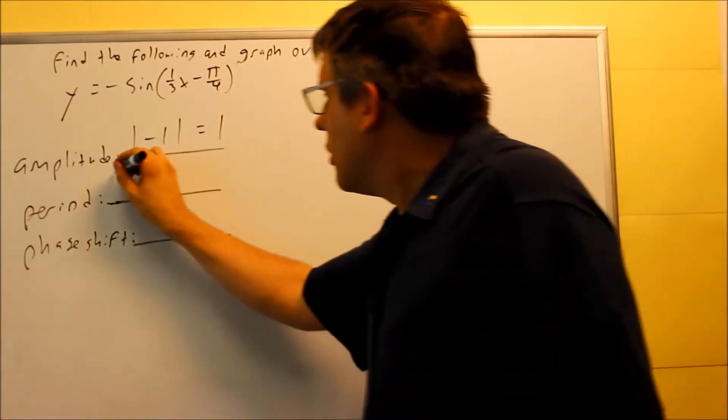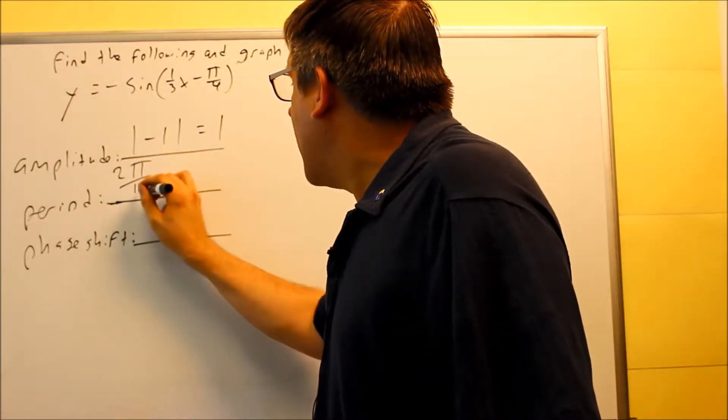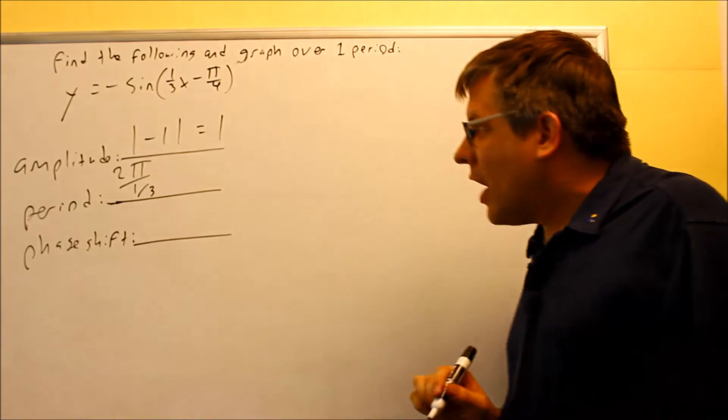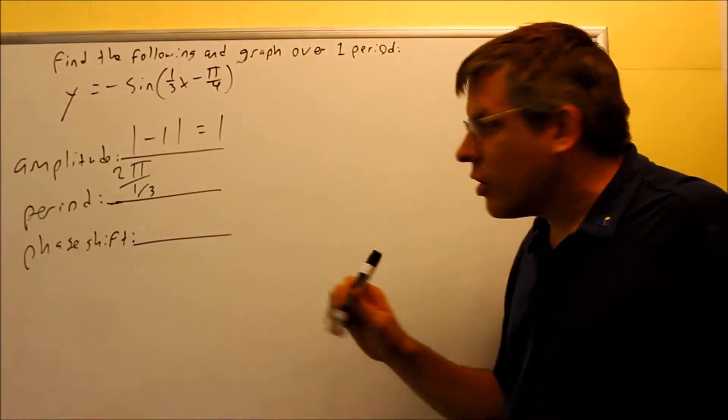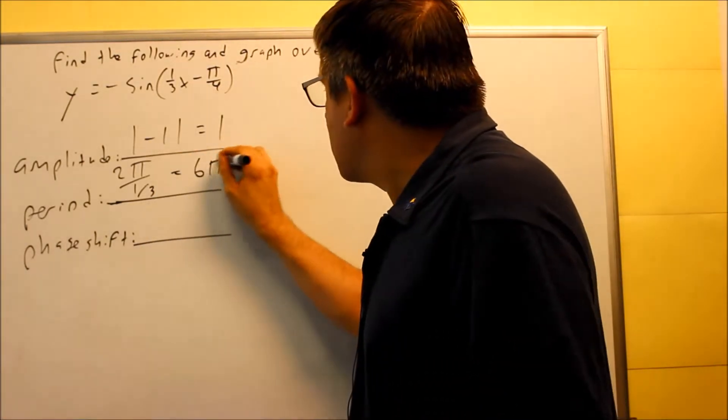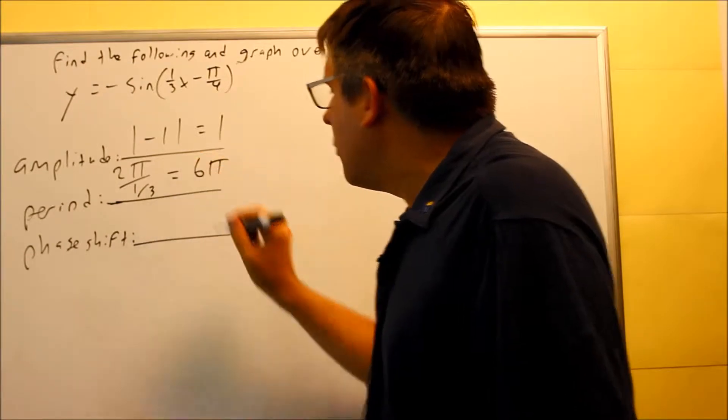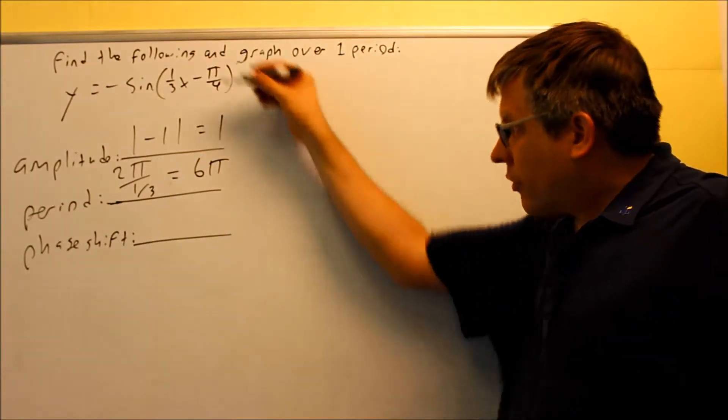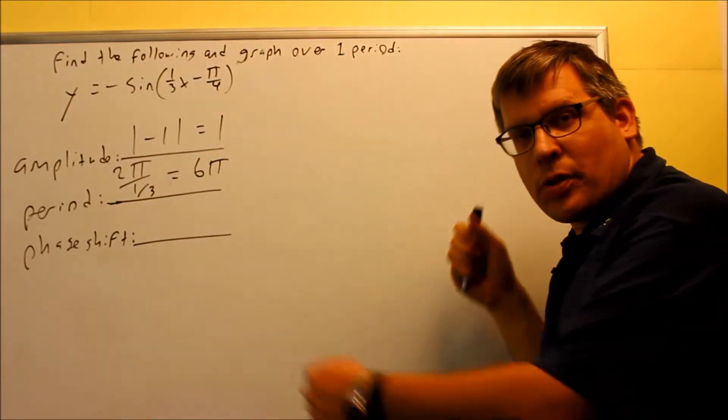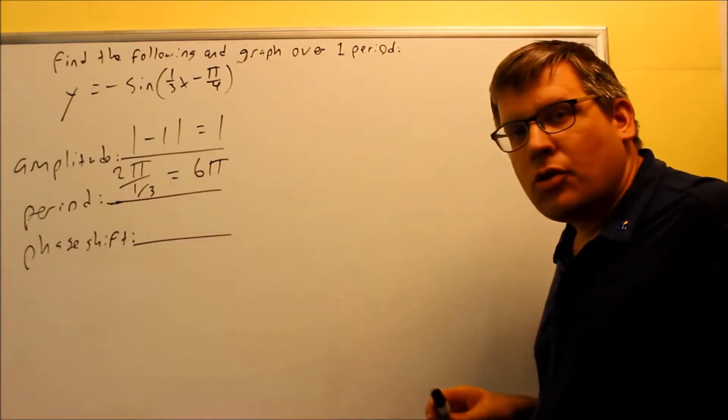Your period is going to be 2π divided by the number in front of the x. So 2π over 1/3, that's going to give you 6π. So 6π would be our new period. The fraction again stretches your period out, so it's actually longer than the normal one.